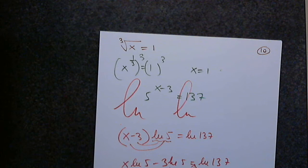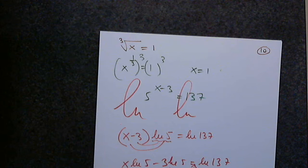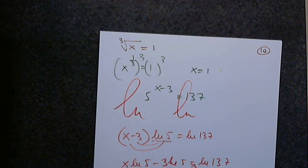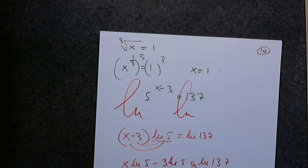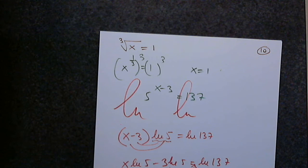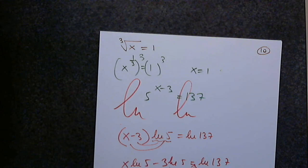The answer is approximately 6.1. I don't believe it, so I'll verify: five caret the previous answer minus three. If our answer 6.1 is correct, when I press enter, I should get 137. If I don't get 137, all these calculations mean nothing and I have to start from scratch. Let's press enter and see if we get 137.